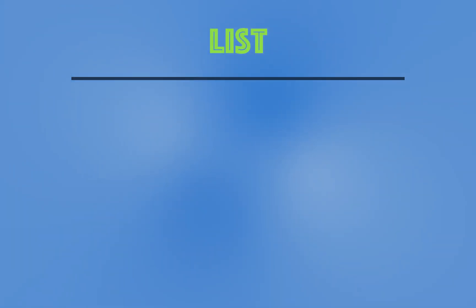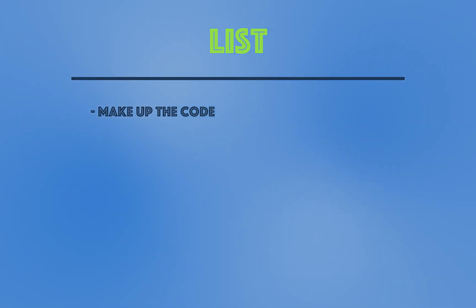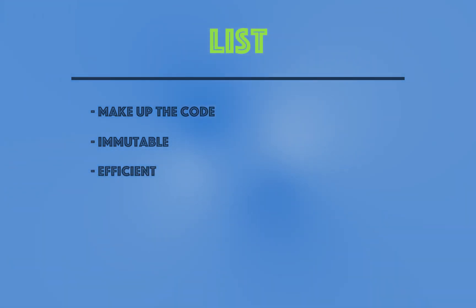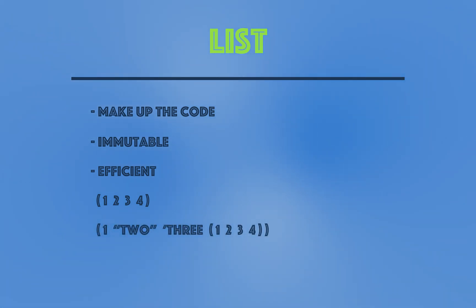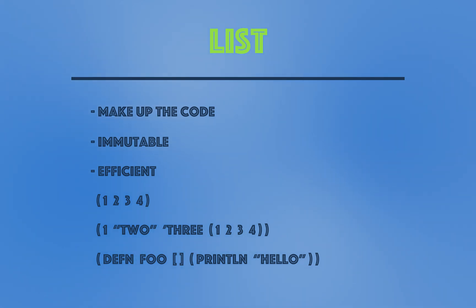Now let's talk about lists, which are very important in Clojure because they make up the code itself. Clojure is a Lisp language, and Lisp stands for List Processor, so everything in Clojure is made up of lists containing different data types. They are immutable and efficient to work with. Here is a list containing four integers: 1, 2, 3, 4. Here is another list containing the integer 1, the string "two", the symbol "three", and also a nested list composed of 1, 2, and 3.